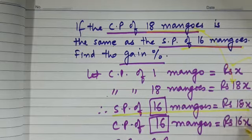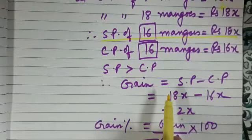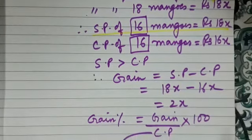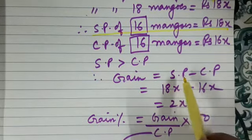Now we can compare these two. We see that 18x is more than 16x, so SP is greater than CP. So there will be a gain and we can calculate gain by using the formula selling price minus cost price.